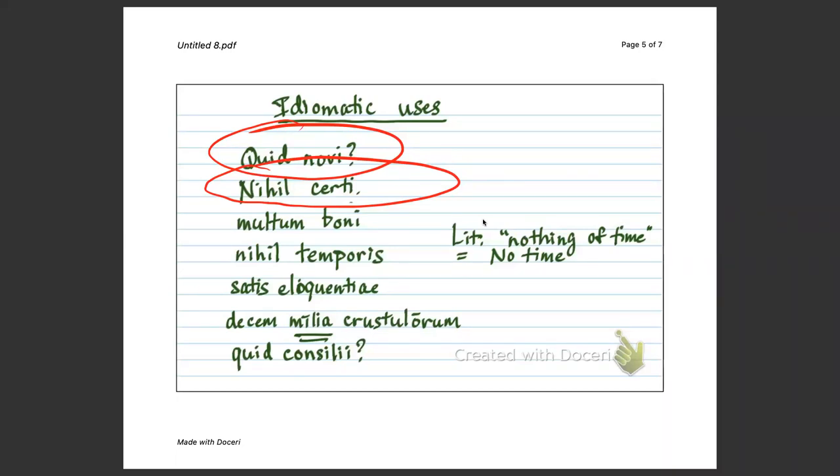Multum boni, literally, much of good, or much good. Nihil temporis, literally, nothing of time. Idiomatically, no time.